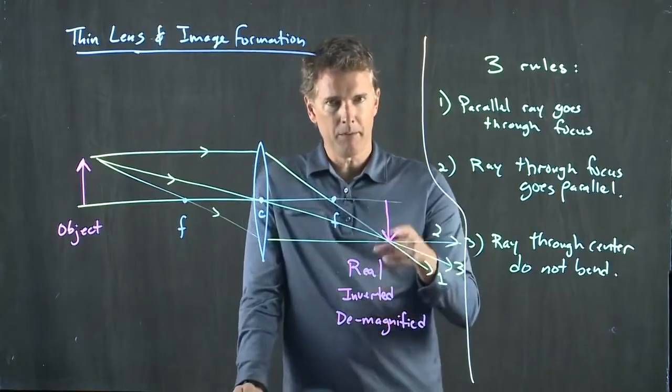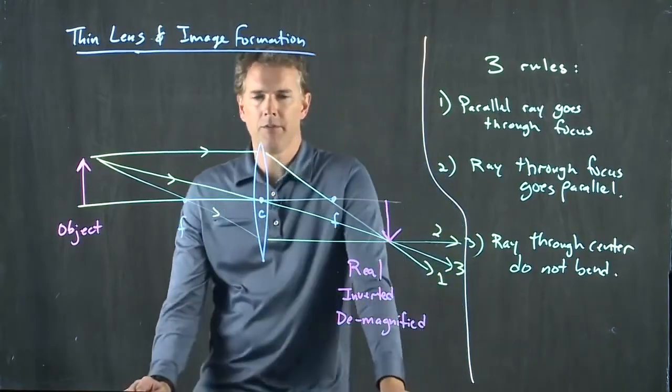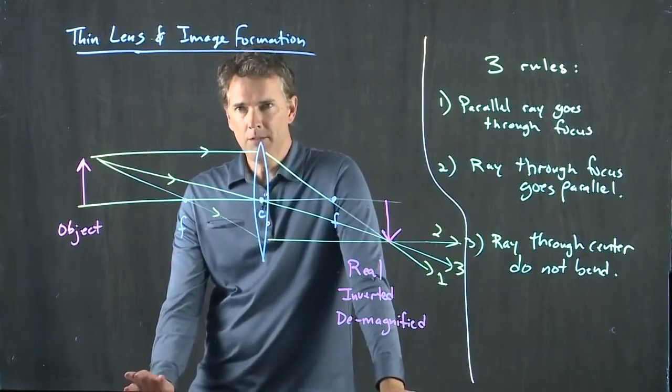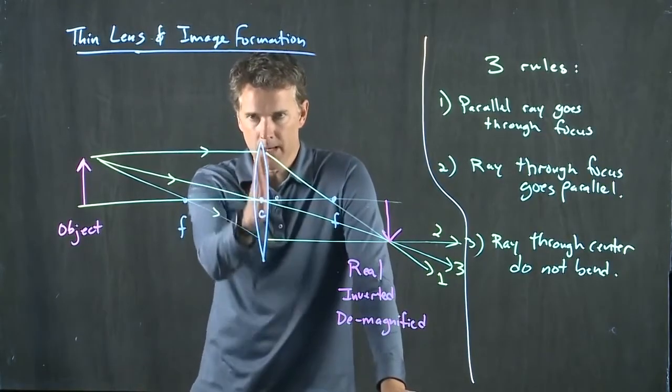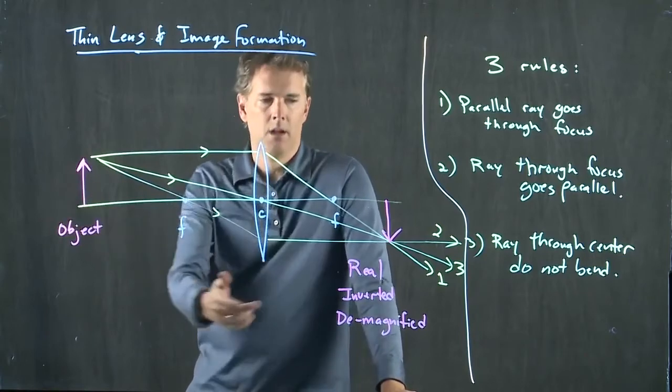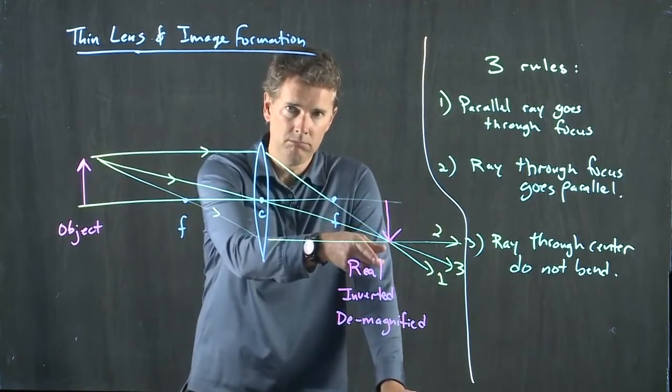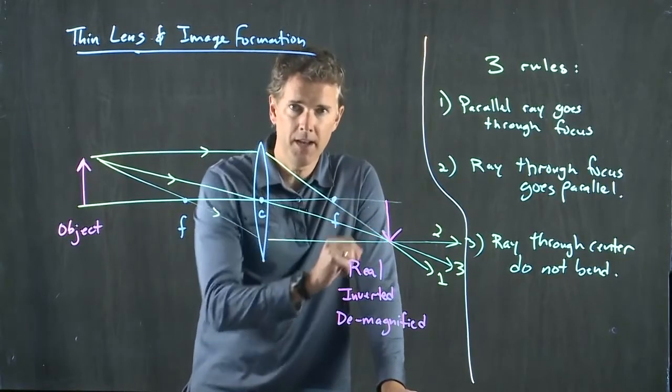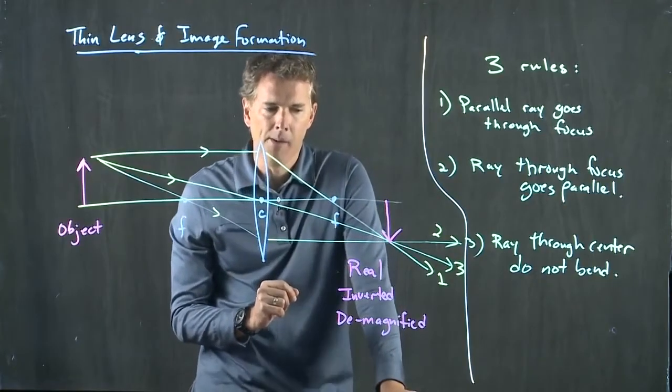Now this idea of it being inverted is sort of interesting. What that means is, when you have a camera and you have a lens and you're looking at a tree, the image on the film, or the CCD array, is upside down.